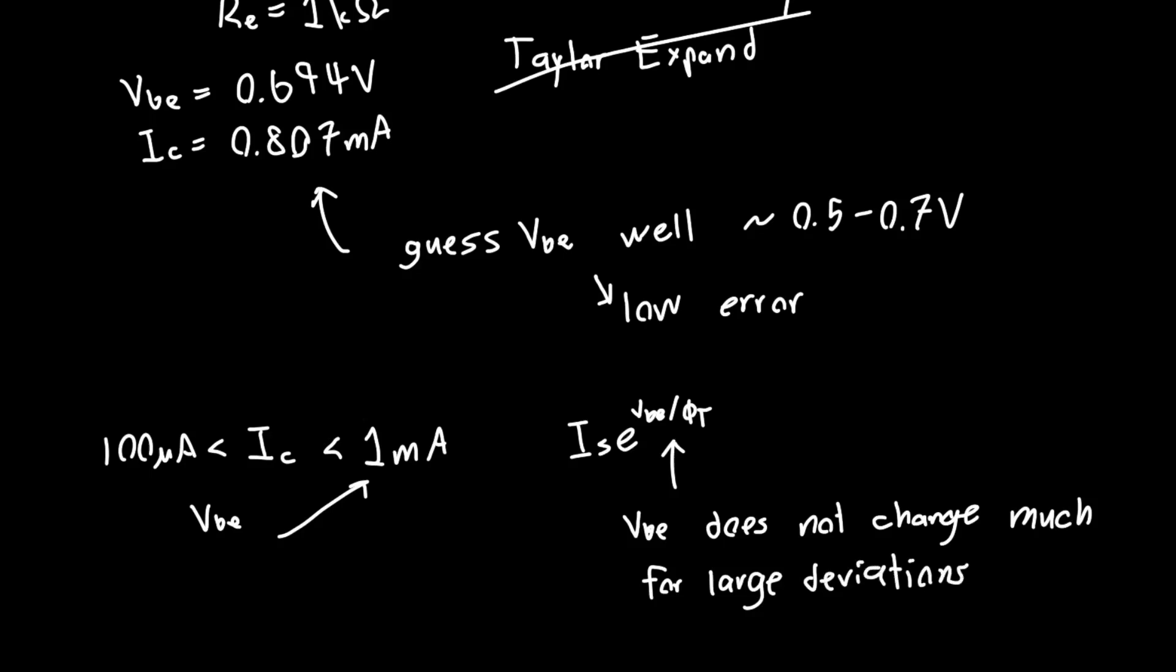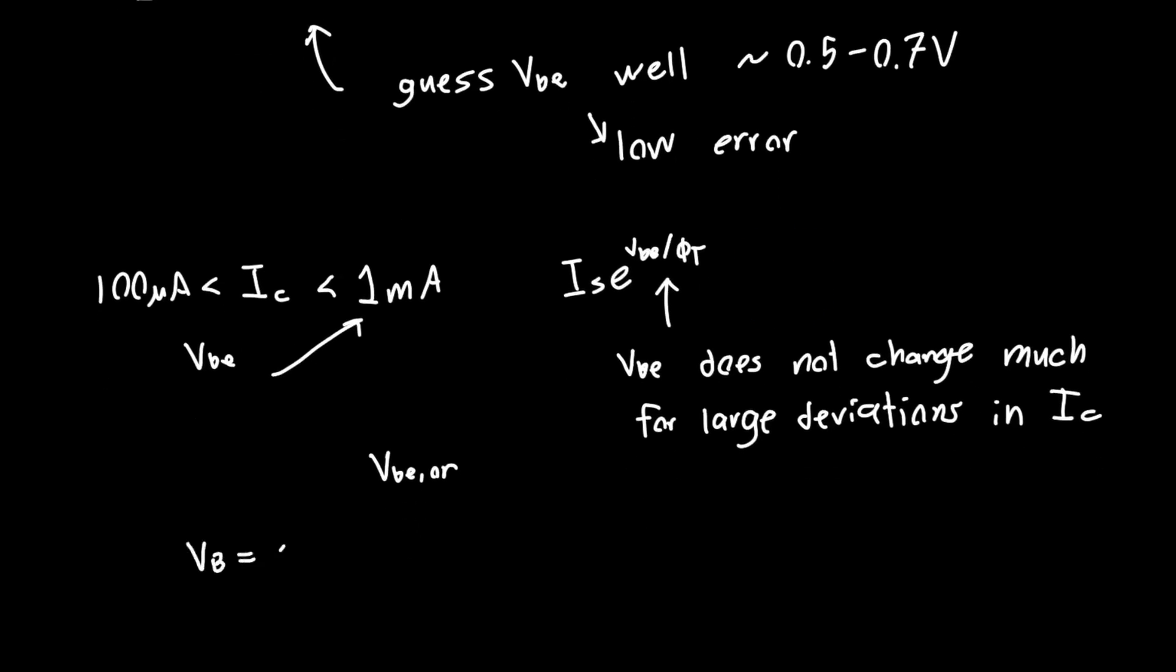So as long as we guess VBE on reasonably well, we're going to have reasonably small error. For example, in the problem above, if you said instead that VBE was equal to one volt, you'll get something like eight percent error, where previously we got one percent error. This comes from the choice of VBE on. This means that our choice of VBE on was not perfect.